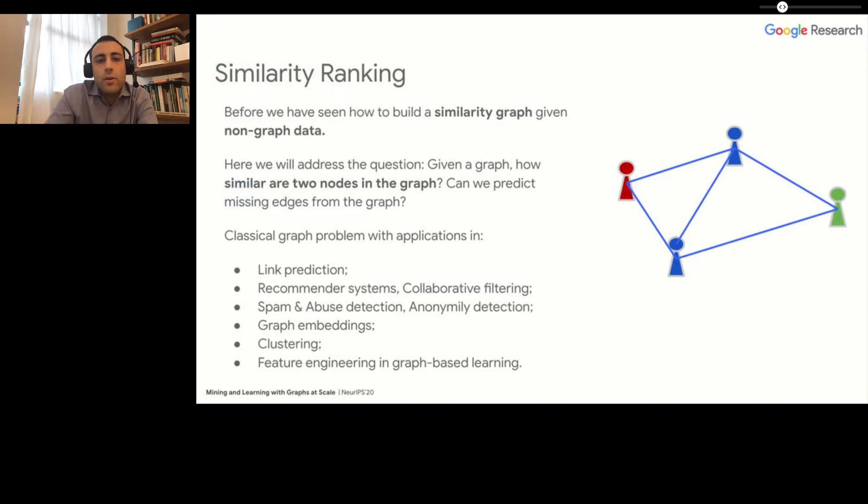Before, we have seen a talk on how to turn non-graph data into a similarity graph. Now we're going to see a different problem: given a graph, how do we understand how similar two nodes are, and how can we use this to solve some problems?